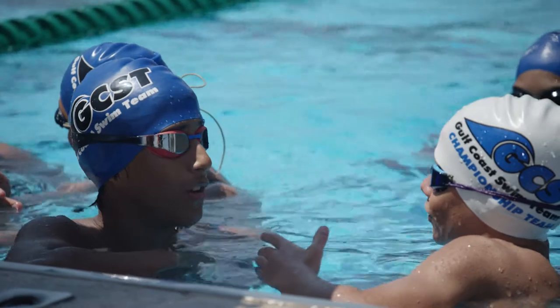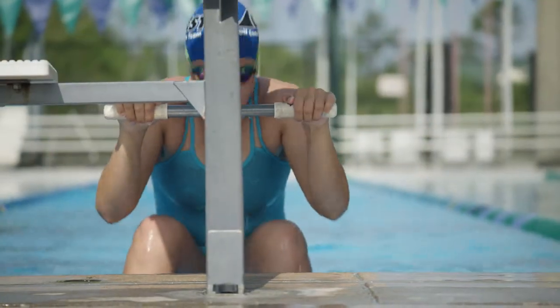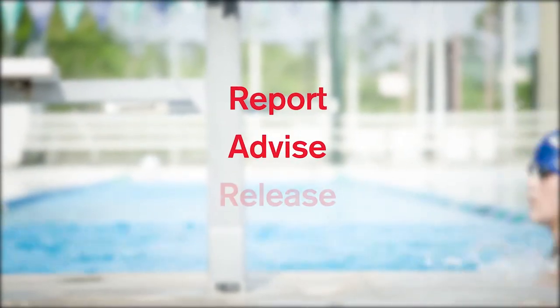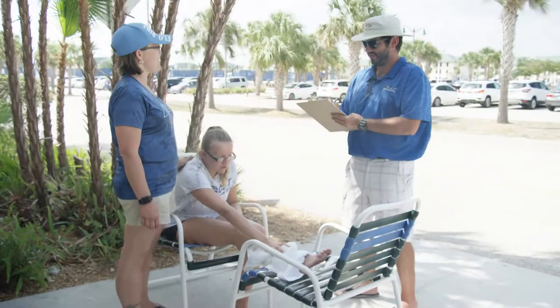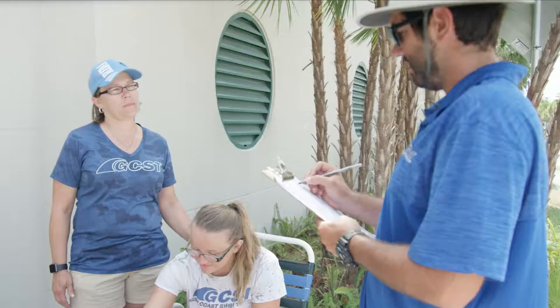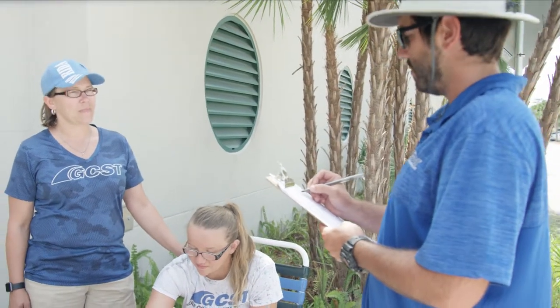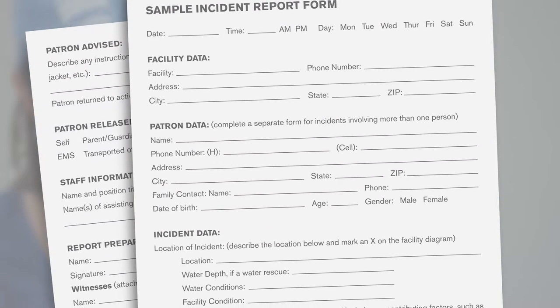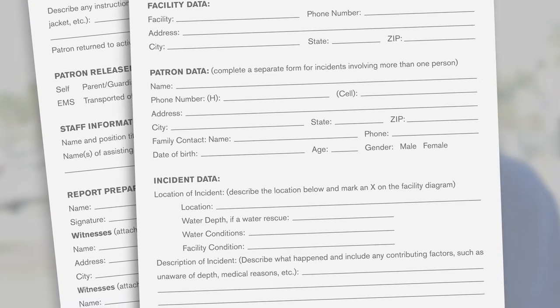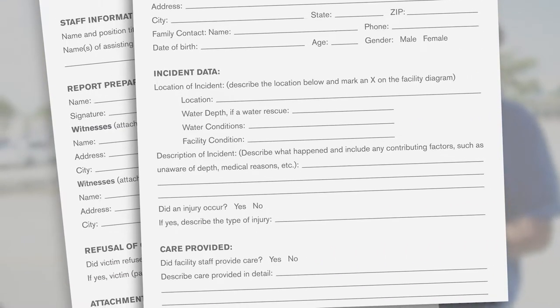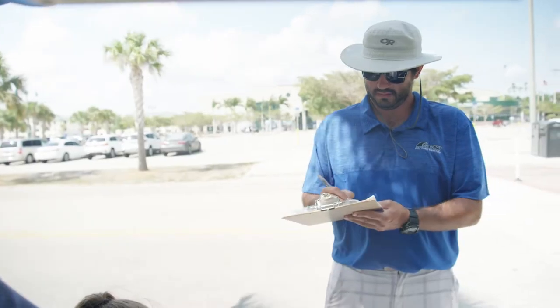Once an emergency has been resolved, members of the safety team still have three important tasks to complete: report, advise, and if appropriate, release. Filling out an incident report needs to be done before the victim is released. If you are the first rescuer, it is your responsibility to fill out and sign the form. This documentation is very important for legal purposes, in addition to the ongoing tracking of incidents that occur in the facility. A member of the safety team may need to record contact information for witnesses, following the facility's policies in gathering witness information or statements.